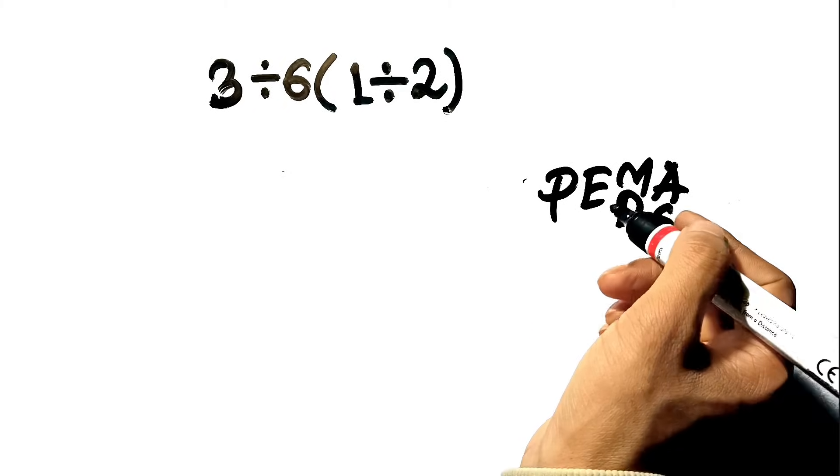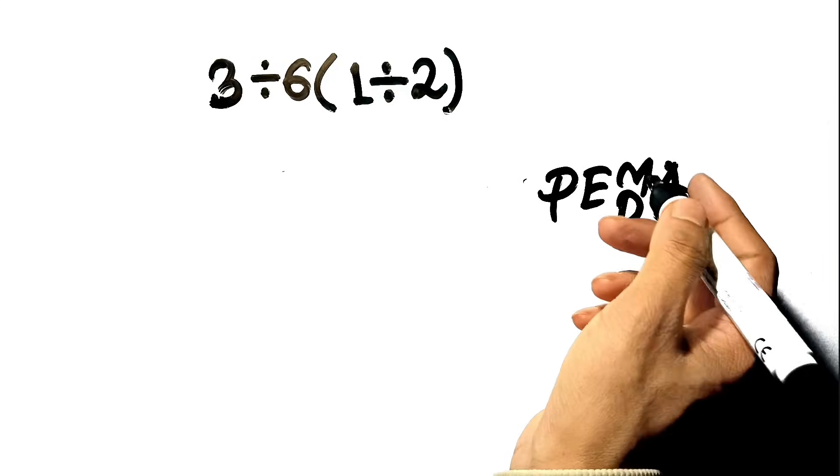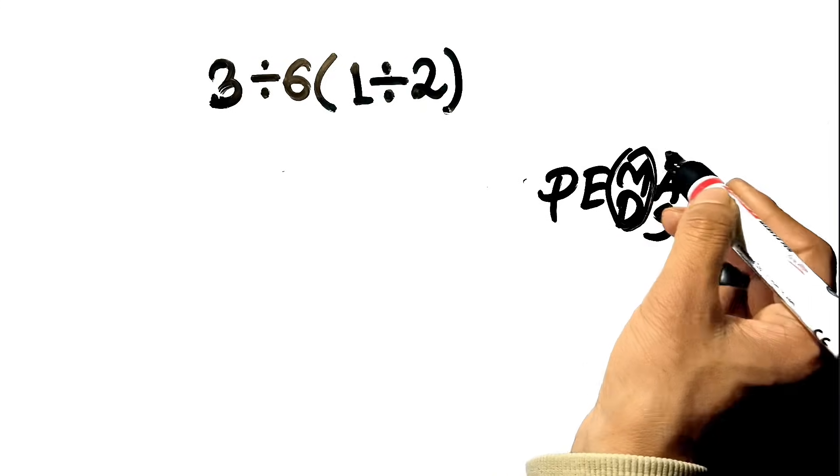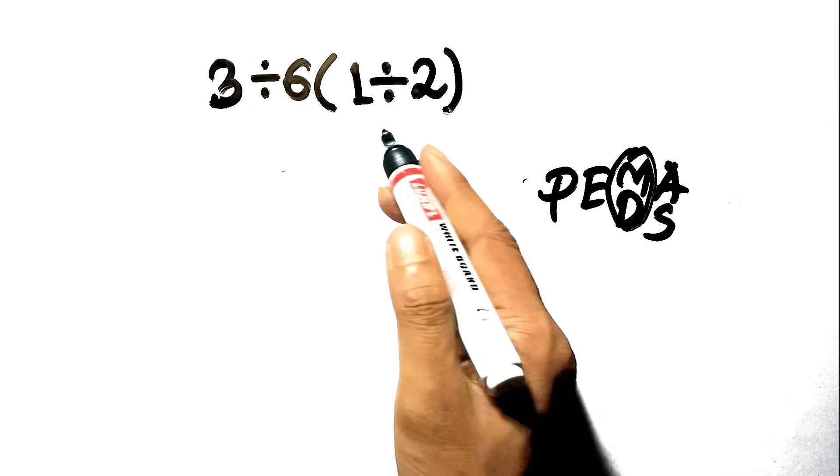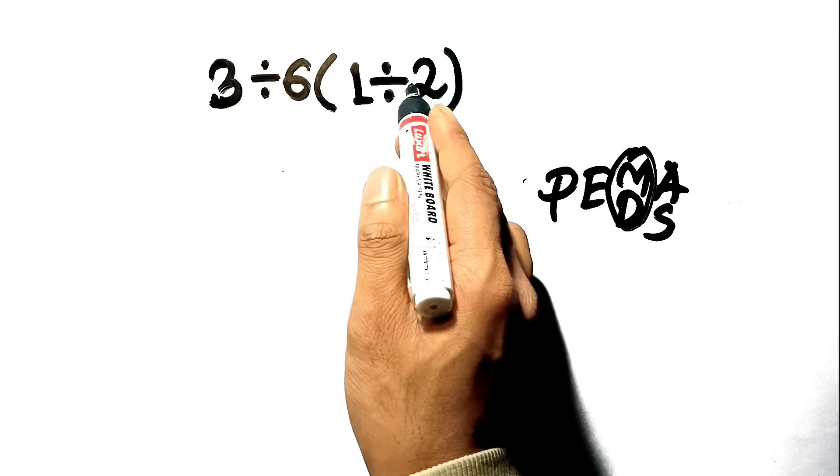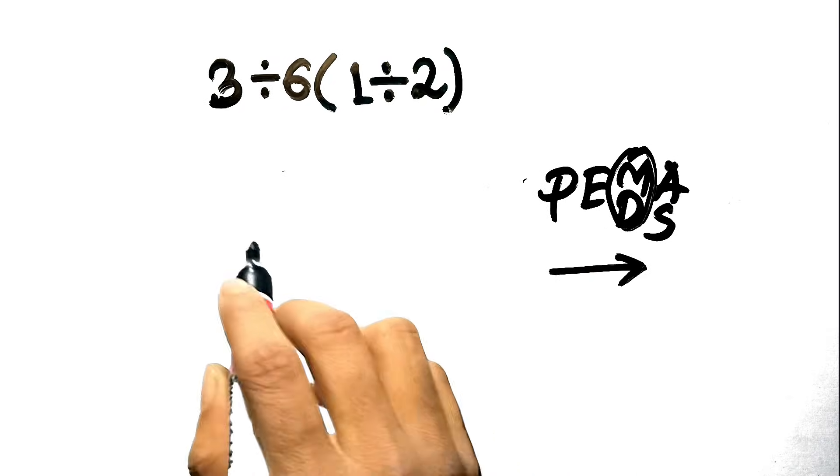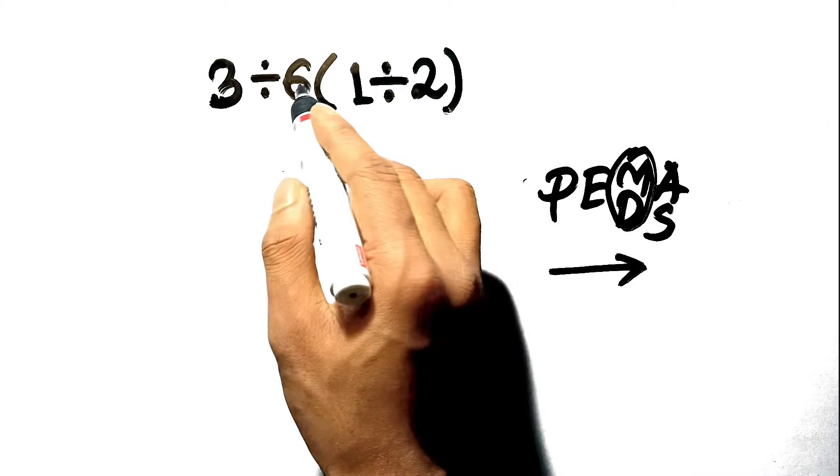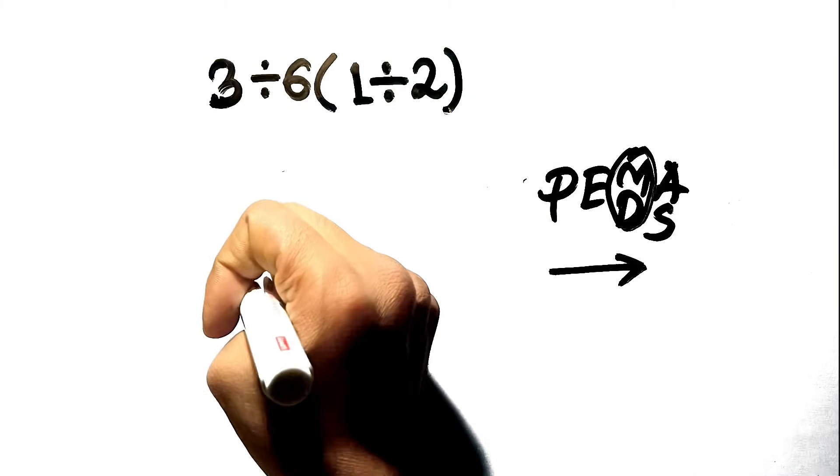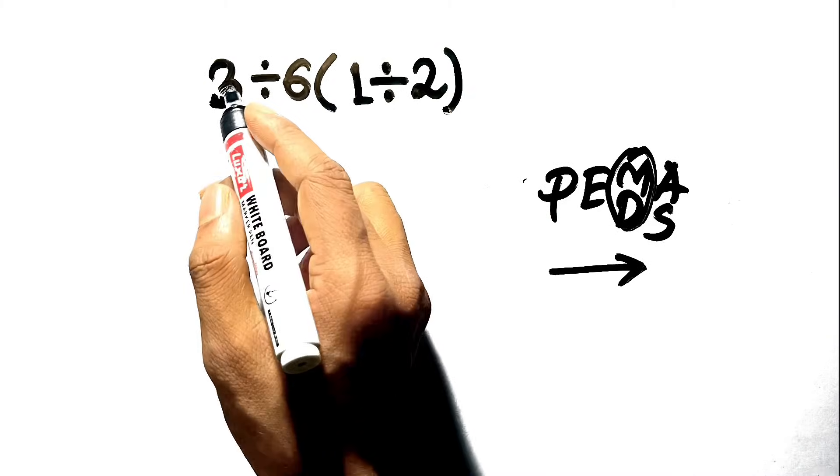But after that, the crucial step is realizing that multiplication and division have equal rank. You don't do all multiplication before all division. Instead, you work strictly from left to right. The division symbol, 3 divided by 6, has to be performed before the multiplication implied by the parentheses.